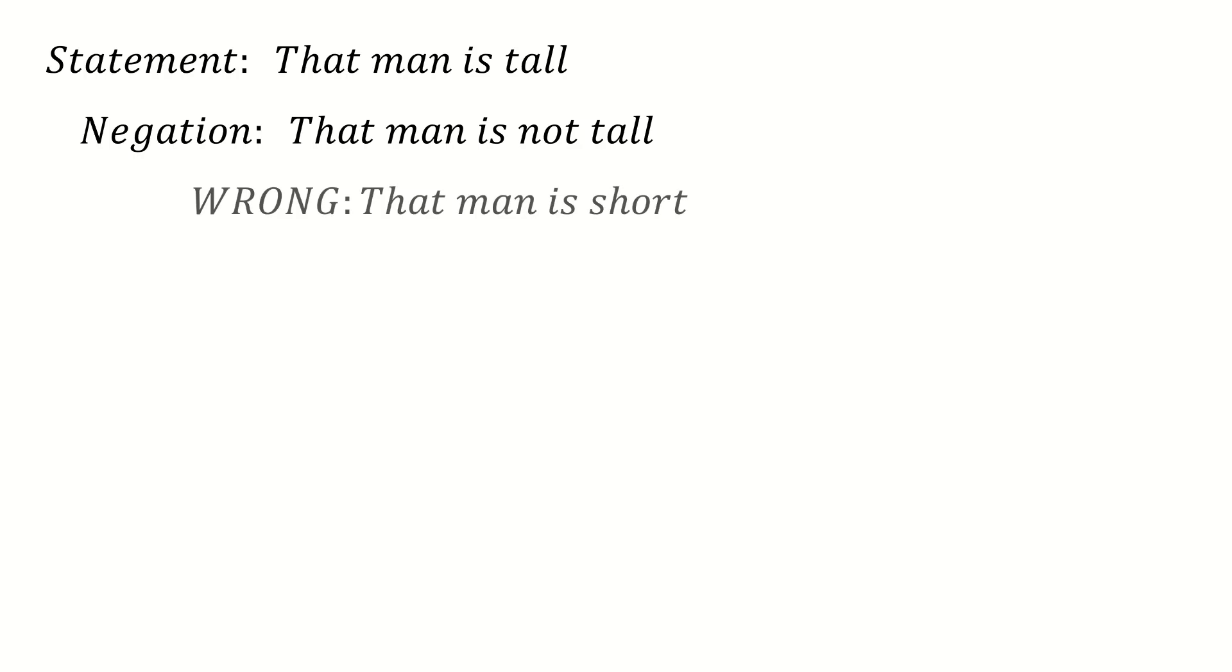The negation is not that man is short. You're not making any extra claims here. You're not saying the opposite thing. And the reason it's not this is because you don't have to be short to not be tall. The man could be an average height, in which case this next statement is also incorrect. And so the negation is just a denial of the original thing. You just add the word not. You don't say anything extra. You don't say anything opposite. You don't correct the statement.